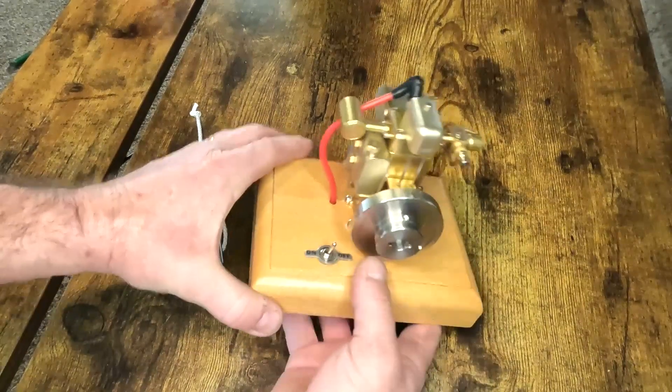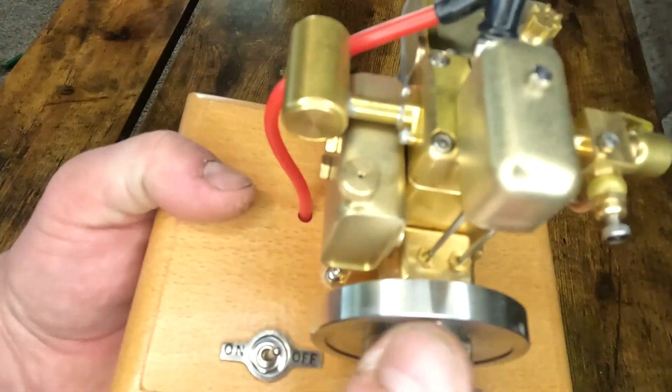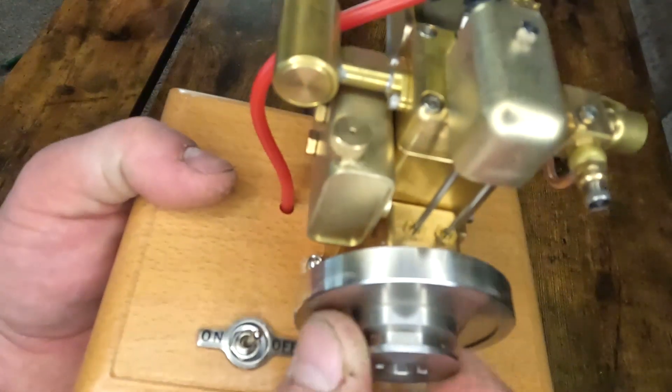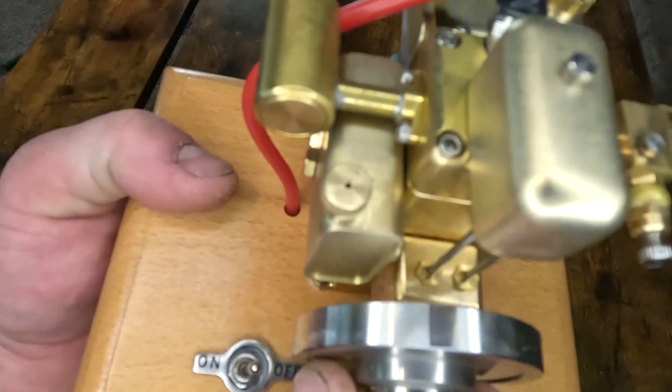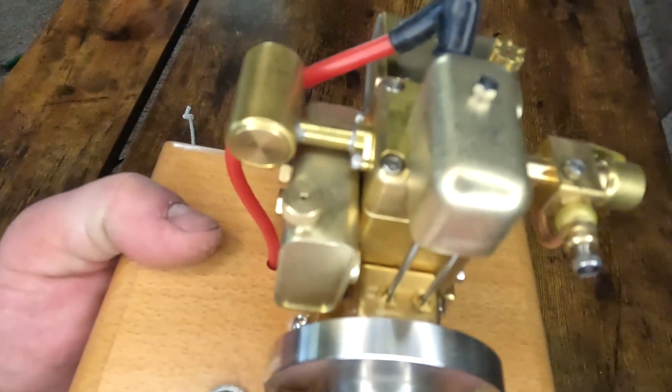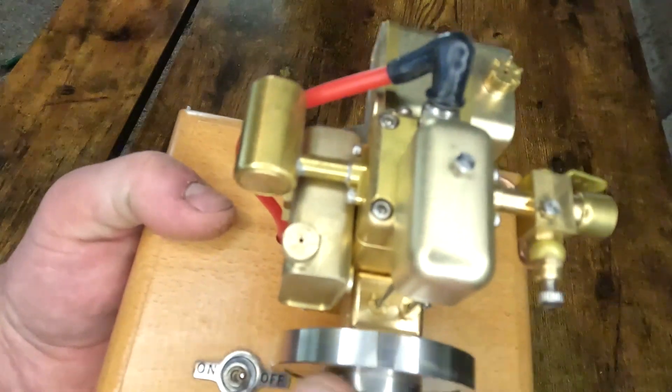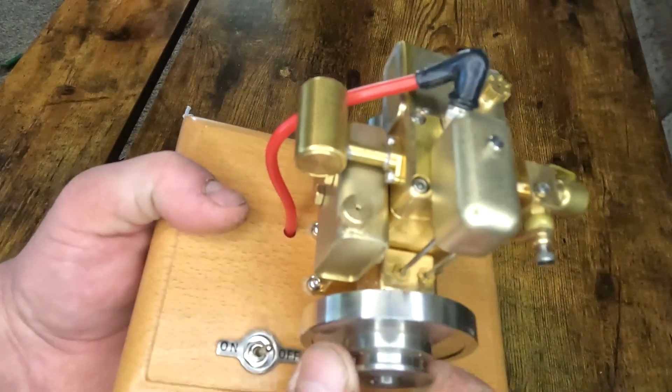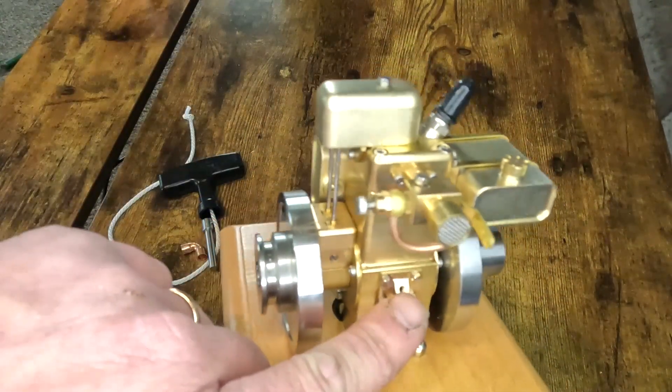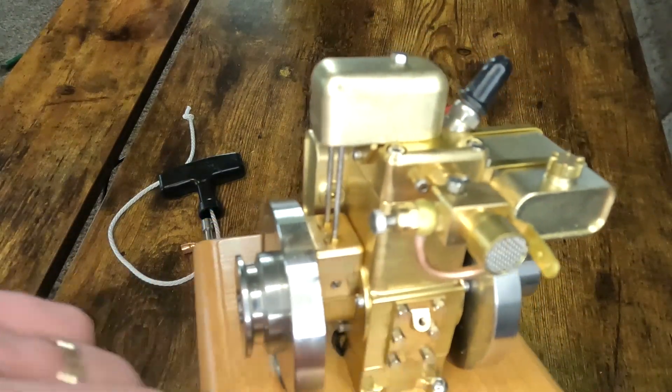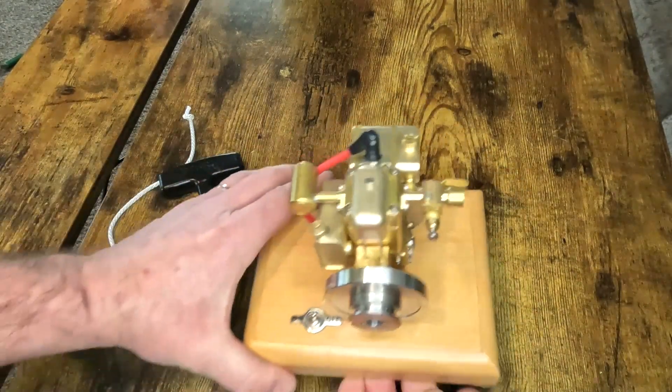Okay, so we've got our engine bolted down tight to our base. If you can see down in here, we've got lash in our valves. You can feel a little bit of compression on it. Appears that this is threaded, but there's no cap for it. We'll look around in the box and see if it might have rattled out.